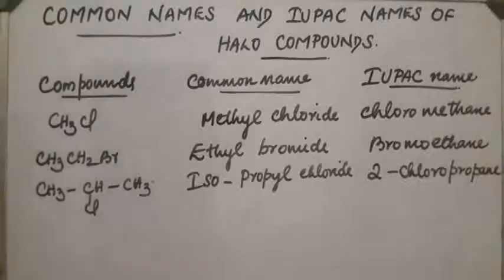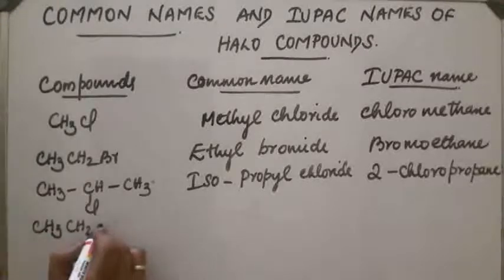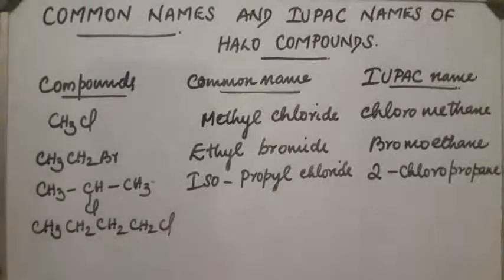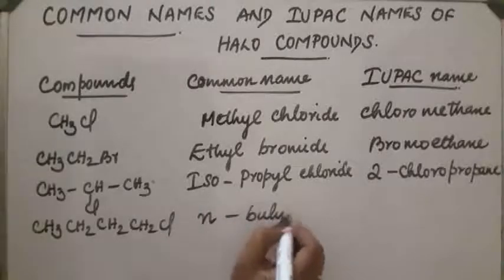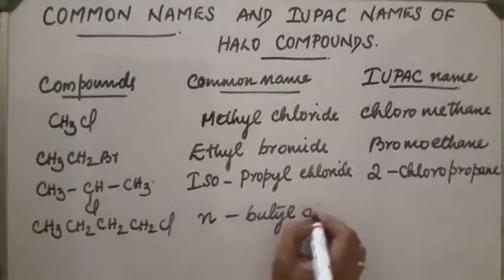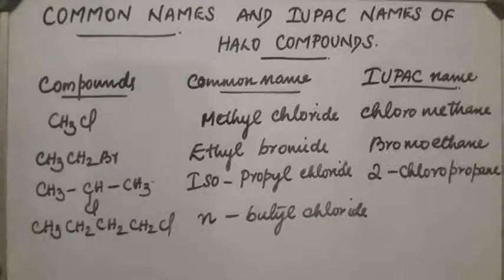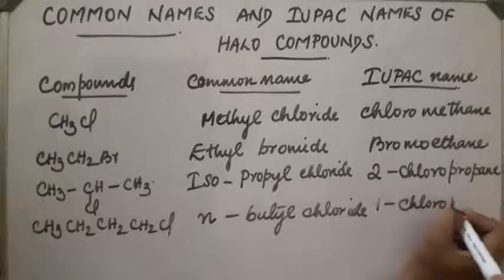Next compound CH3CH2CH2Cl. The common name of this compound is n-butyl chloride. Its IUPAC name will be 1-chlorobutane.